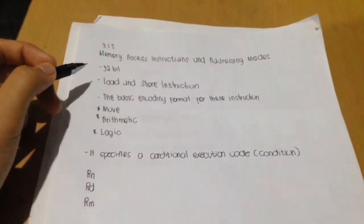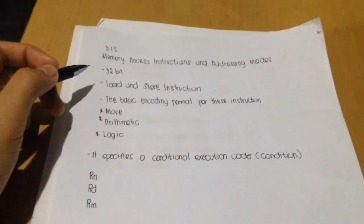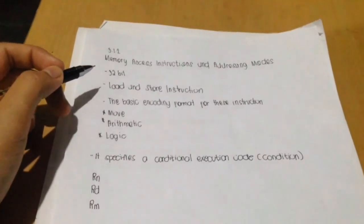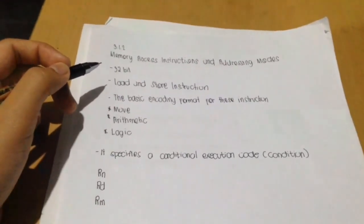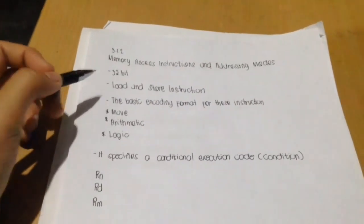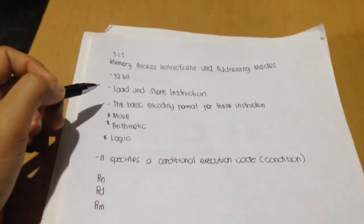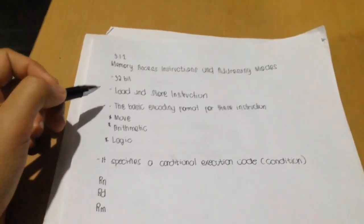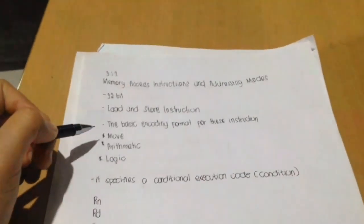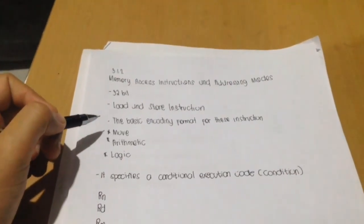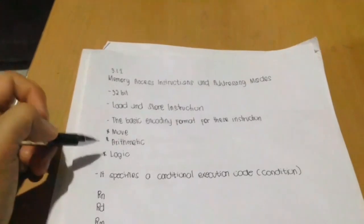Each instruction in the ARM architecture is encoded into a 32-bit word in a reasonably uniform way. Access to memory is provided only by load and store instruction. The basic encoding format for this instruction is MOVE, arithmetic, and logic.